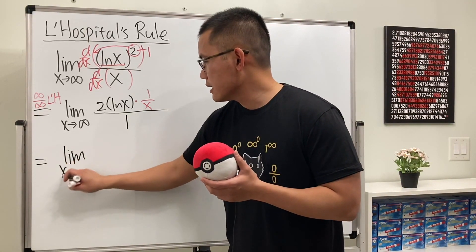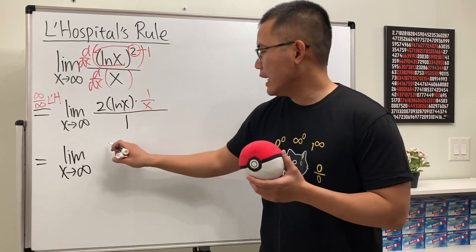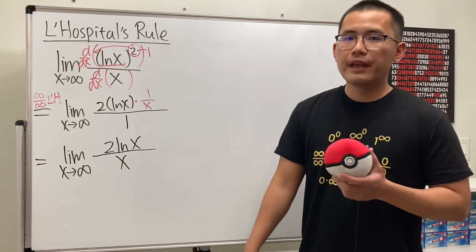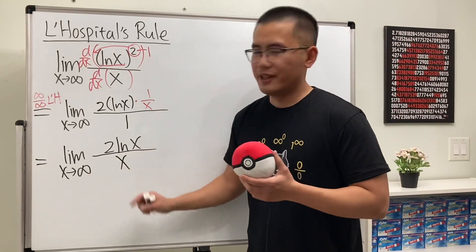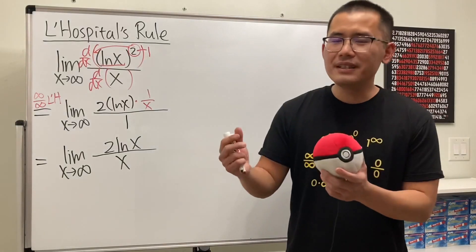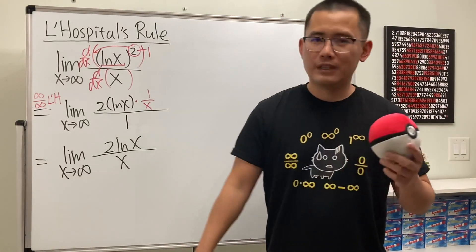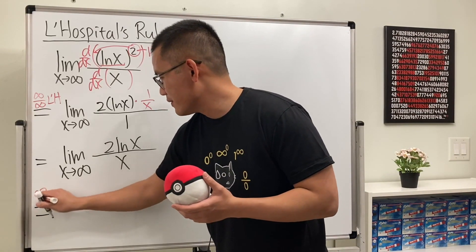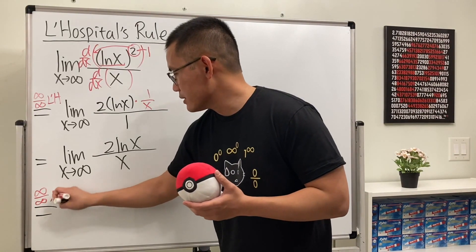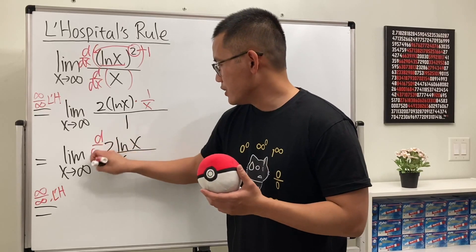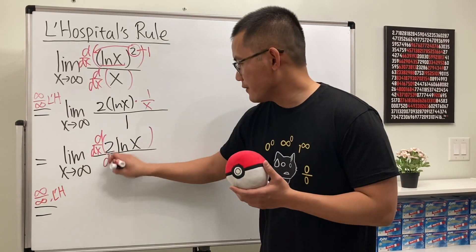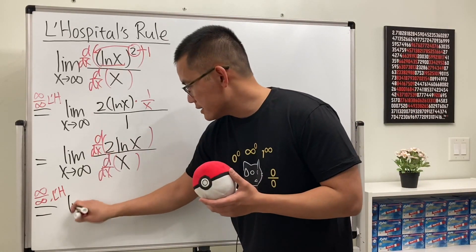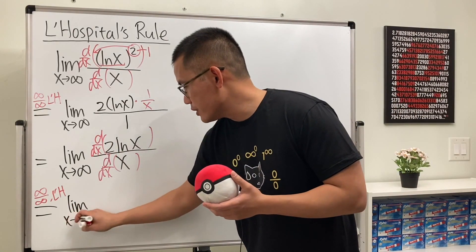This gives us the limit as x approaching infinity of 2 times ln x over x. When we plug infinity in here, we get infinity over infinity again, so we apply L'Hôpital's rule one more time. Differentiate the top and then differentiate the bottom.